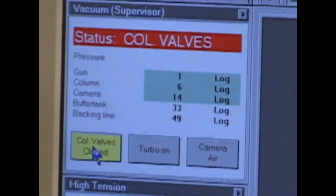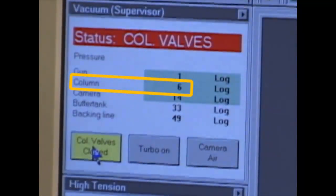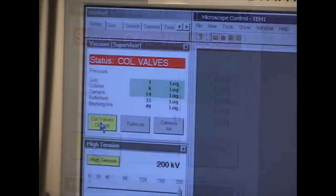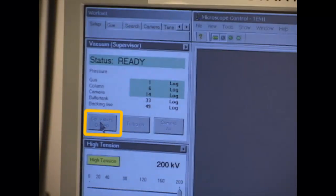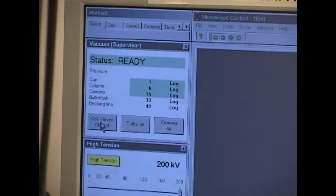After the holder has been inserted, the vacuum in column should read 6, and you can start to adjust the beam. Click the Column Valves Closed, and the button changes from yellow to gray, and the status reads Ready.